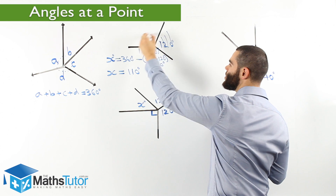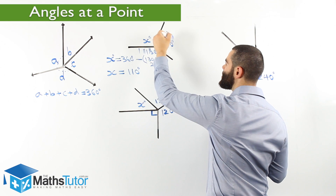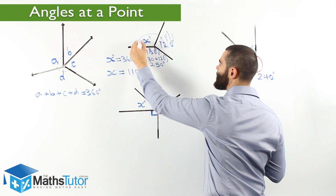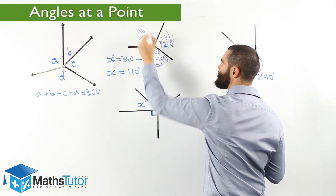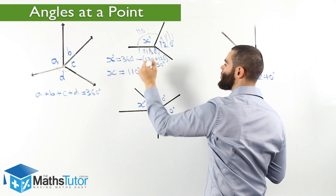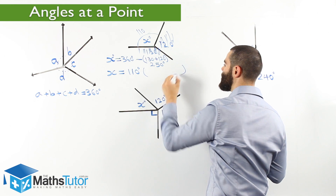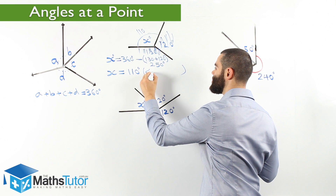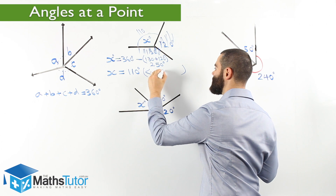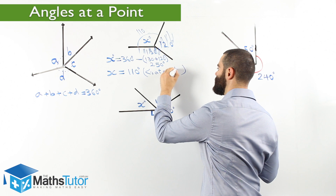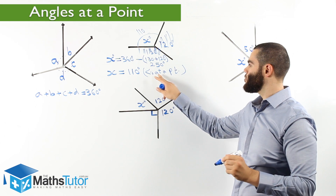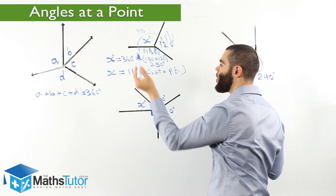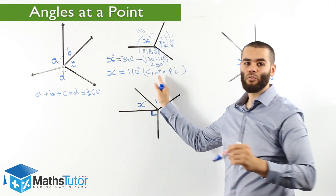360 is the total. Take away 130, take away 120. X is going to be 110. What is our reason? We always have to write our reason. Our reasoning: angles at a point. This is our reason. X is 110 degrees — why? Angles at a point.